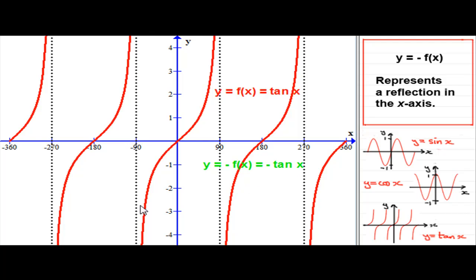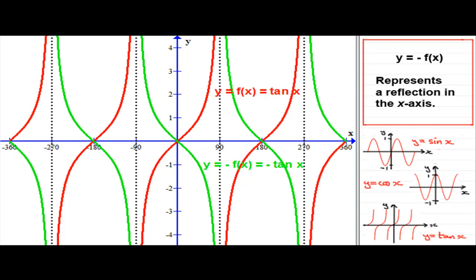We've got to reflect this graph in the x-axis. Remember, all these points on the x-axis stay invariant. Points up here go down to here, and points down here get mirrored up to here. What you should have would be something like that.